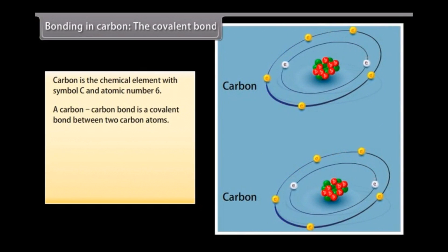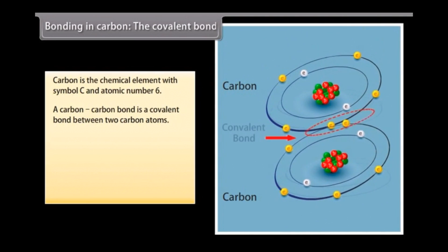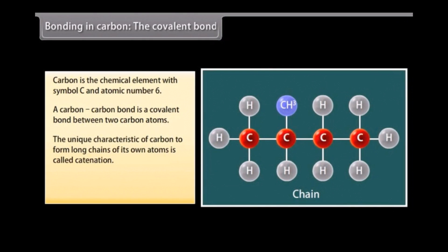A carbon-carbon bond is a covalent bond between two carbon atoms. The most common form is the single bond, a bond composed of two electrons, one from each of the two atoms. Carbon also has the unique characteristic to form long chains of its own atoms. This property is called catenation.